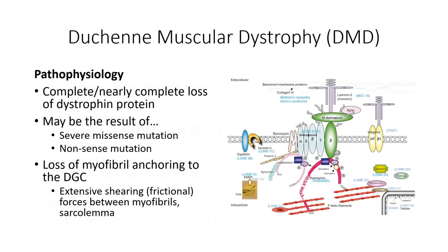Duchenne muscular dystrophy results from any of a number of nonsense mutations that result in the complete absence of any functional dystrophin protein within the cell. As described in the previous segment, this results in repetitive bouts of damage and repair that quickly exhaust the fiber's regenerative abilities and leads to signs and symptoms early in life.